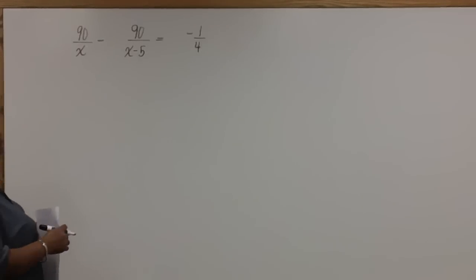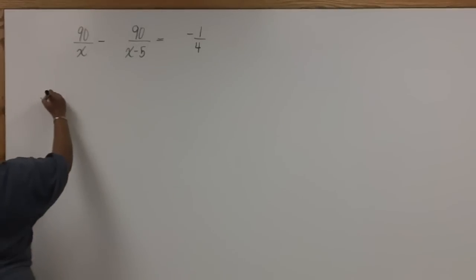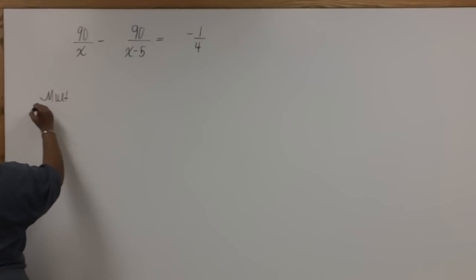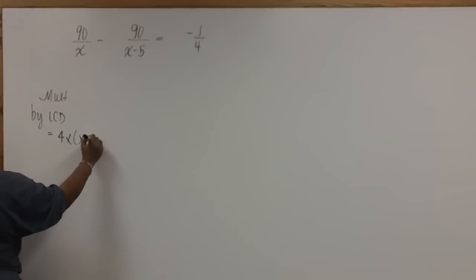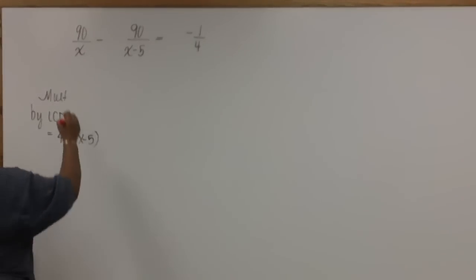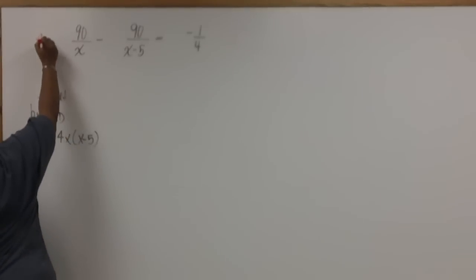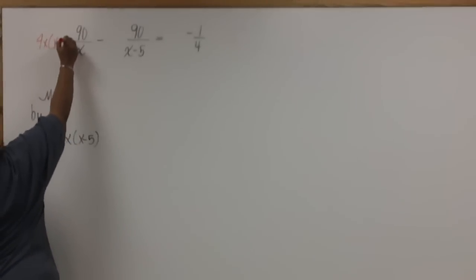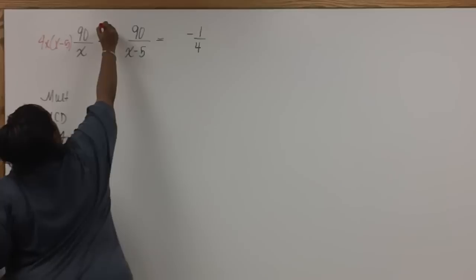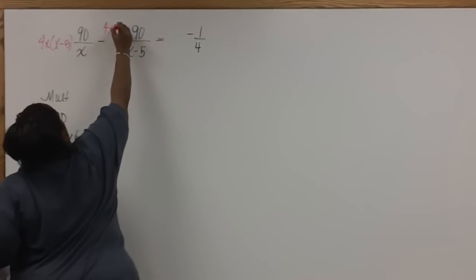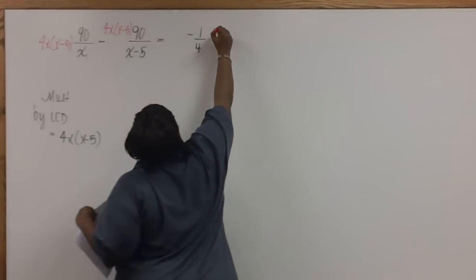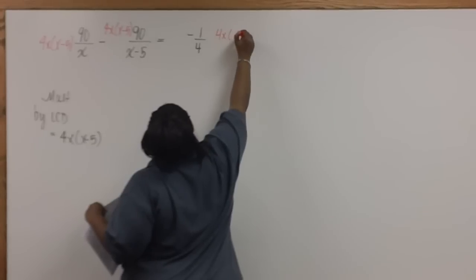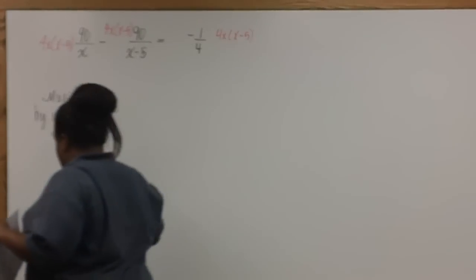The first thing we'll do is multiply by the LCD of 4X times X minus 5. Now, we're ready to cancel.